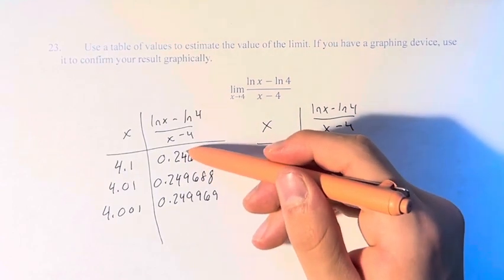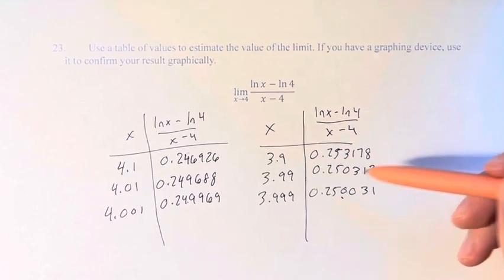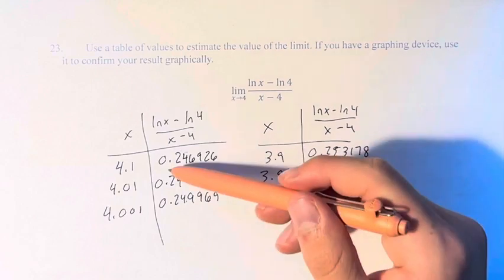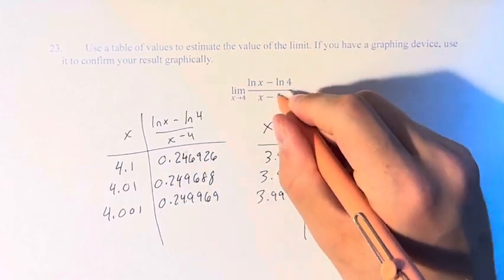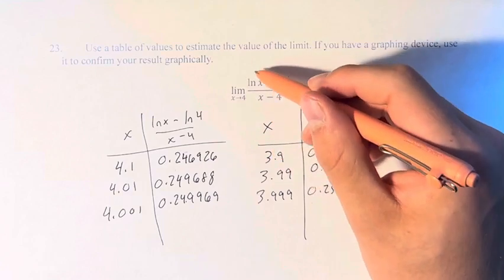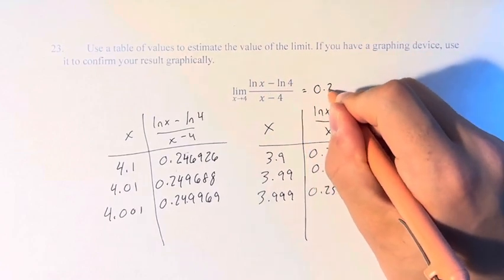And so we can see, as we're approaching from the right and the left, the values are approaching 0.25. And since the right and the left match, we can say that the limit as x approaches 4 of ln of x minus ln of 4 over x minus 4 is equal to 0.25.